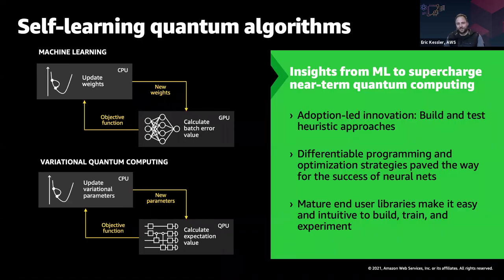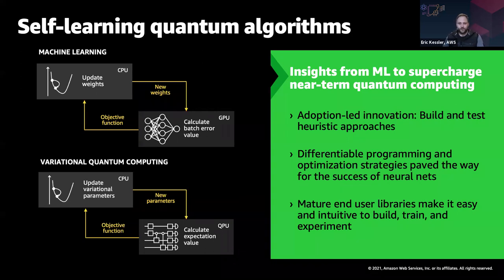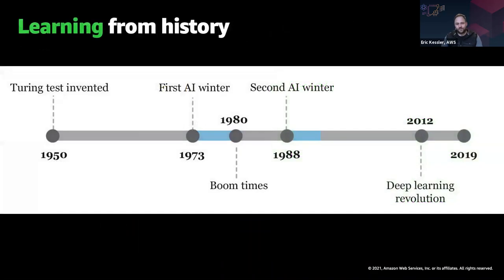I've talked about adoption-led innovation. I think there's a lot we can learn from the machine learning community just by leaning into that build-and-test mentality. But there's more: differentiable computing, the idea of backpropagation, was really what helped neural networks break through, and also the open-source tooling and user libraries that make it easy and intuitive to train and experiment with these models were fundamental for the breakthrough of deep learning. My point is that we have a lot to learn from the machine learning community when we look at quantum computing today.